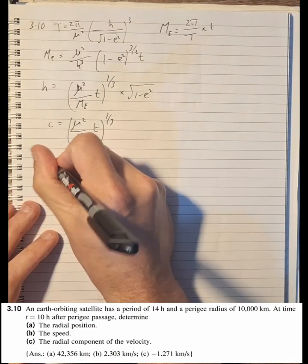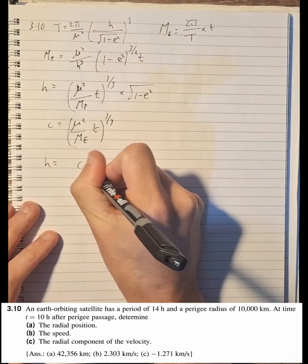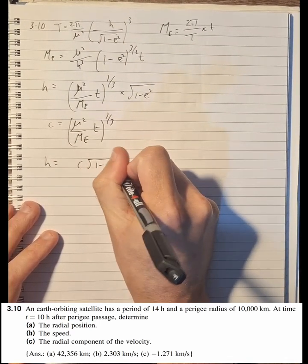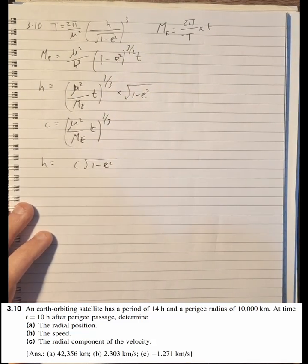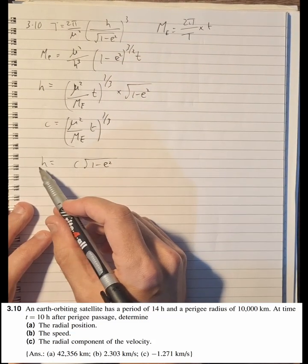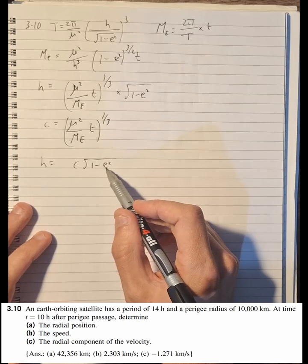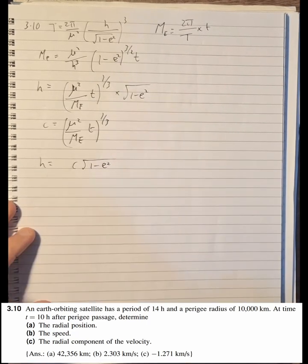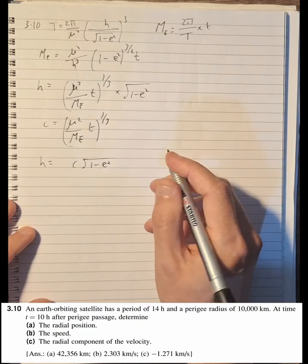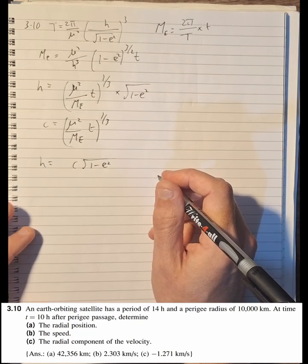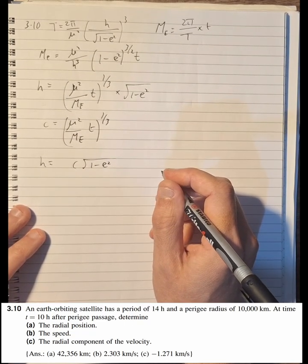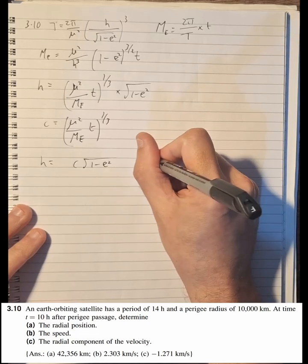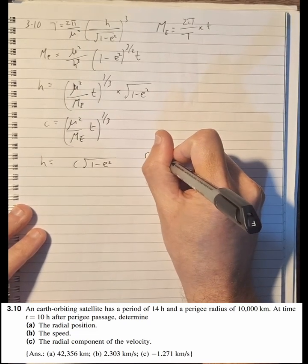We will say h = c × √(1-e²), but at this point we don't have h and we don't have e, so we can't solve that yet. So what we're going to do is put it into the orbit formula for the perigee radius.